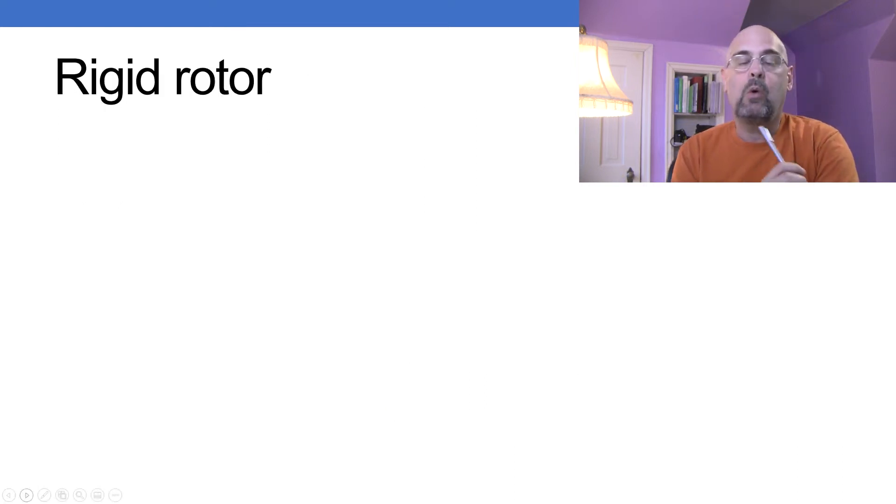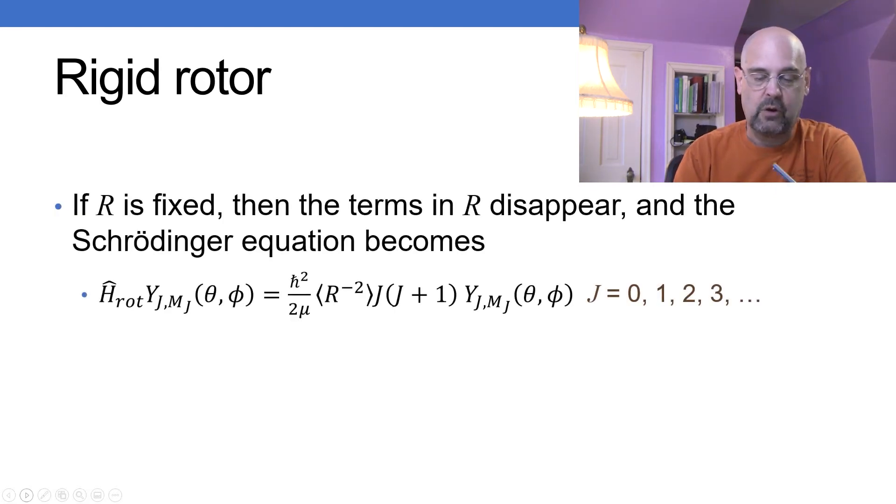Now we're going to go with what's called a rigid rotor approximation. That is that the molecule is going to be rotating, is actually vibrating much faster than it rotates. So it's rotating like this, it's vibrating like this, so essentially as it's moving it looks like it's a constant distance. So if R is fixed then all the terms in R disappear and the Schrödinger equation becomes as we've given this right here.